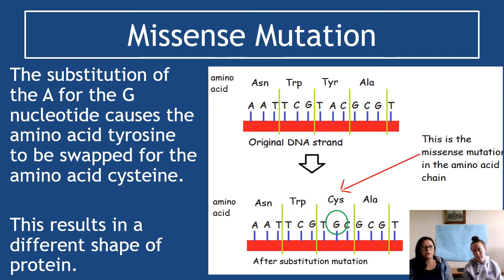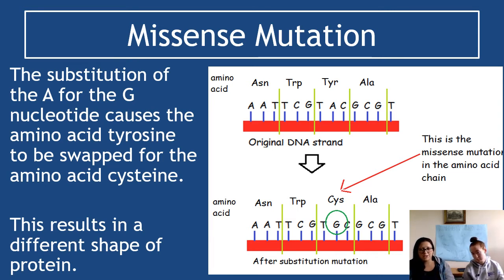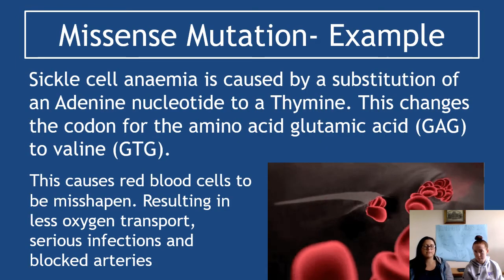Here is an example: a substitution of adenine for guanine — that's where the green circle is — causes the amino acid tyrosine (TYR) to be swapped for the amino acid cysteine (CYS), resulting in a different shape of protein. So the missense mutation in the amino acid is cysteine instead of tyrosine, and the mutation in the DNA is a substitution. The key idea is: if the exam asks about a DNA mutation, you use the terms substitution, insertion, or deletion; if it asks about mutations in the amino acid or protein, it's missense or nonsense.